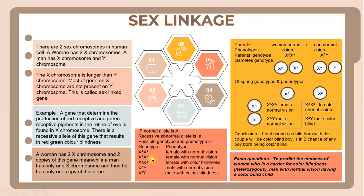For genotype X^A X^A, the phenotype is a baby girl with normal vision. X^A X^a also represents a baby girl with normal vision. X^a X^a refers to a baby girl with colorblindness. X^A Y is a baby boy with normal vision, and X^a Y is a baby boy with colorblindness.